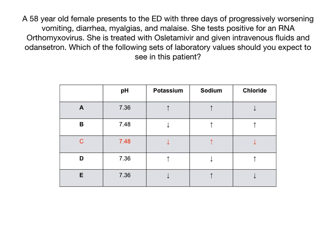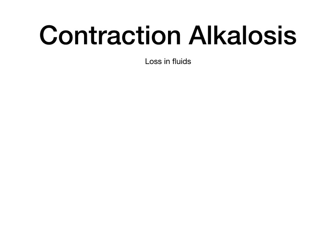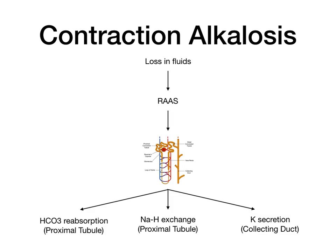In order to get this question right and to train your brain to recognize the pattern, you need to be familiar with contraction alkalosis. To best understand contraction alkalosis, we should look at the physiology. It begins with a loss in fluids, which activates the renin-angiotensin-aldosterone system, leading to multiple downstream effects on the nephron — two changes in the proximal tubule and one in the collecting duct.